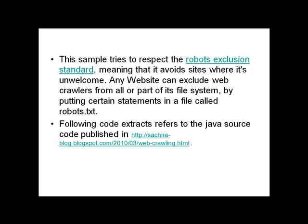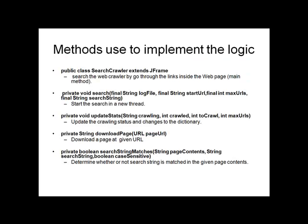The following code extracts refer to the Java source code published at the provided link. Methods used to implement the logic include: Search Crawlers — used to search in a new thread; Update States — used to update the crawling status; Download Page — used to download a page at a given URL; and Search String Matches — used to determine whether or not a search string matches.